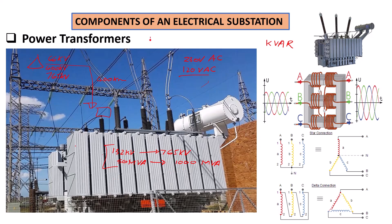...up to 132 kilovolt for distribution transformers, and the MVA volt-ampere rating will be somewhere between 2 and 10 megavolt ampere. So that is the only difference between them — the rating.